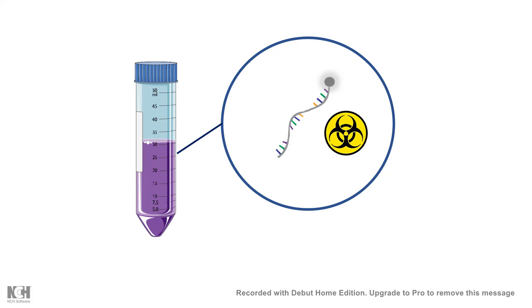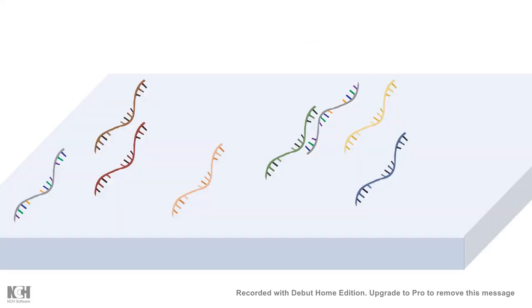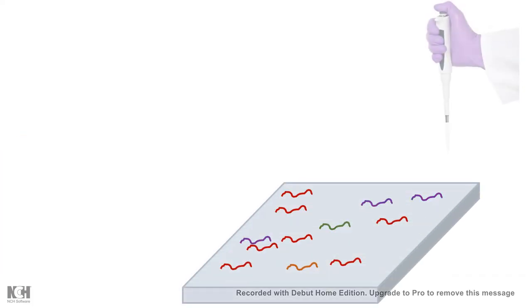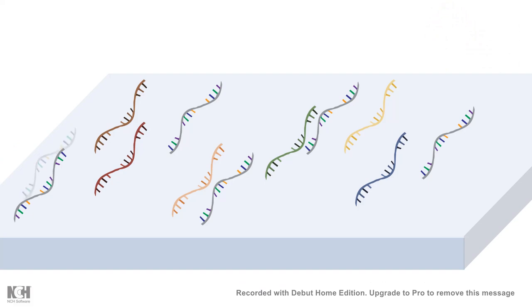The probe hybridization works by complementary base pairing, so the probe would complementary base pair with the mRNA of interest. If the probe is nonspecific, then it would be washed away when we wash the membrane with buffer, so only the specific interaction is retained and all the nonspecific interactions are washed away.